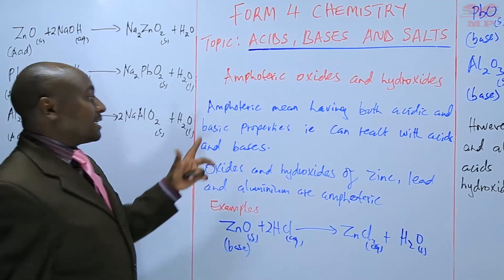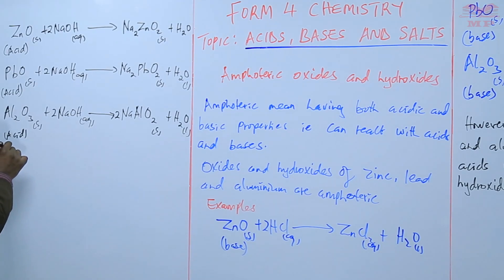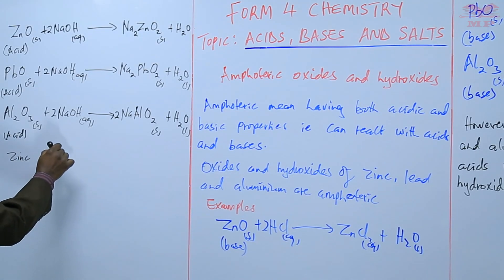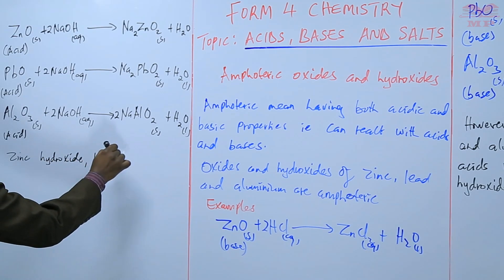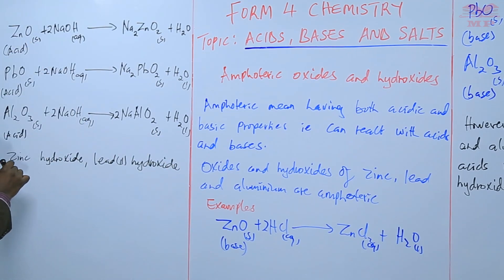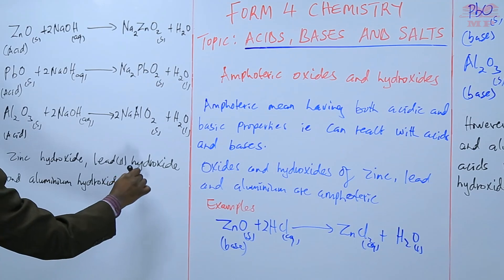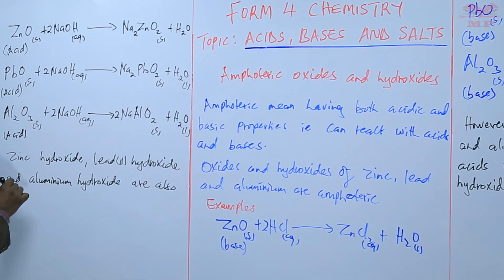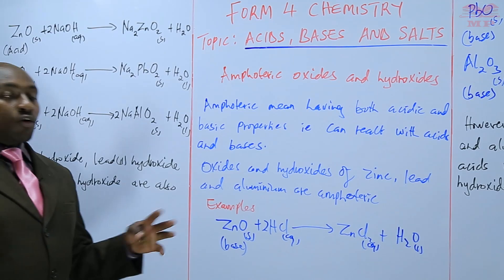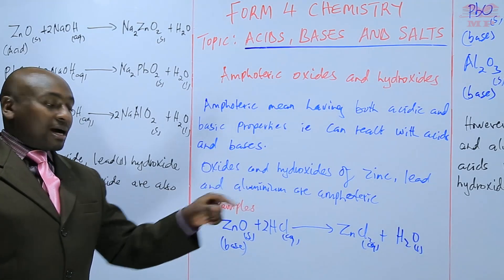So basically, their oxides are amphoteric, meaning they have both acidic and basic properties. Zinc hydroxide, lead(II) hydroxide, and aluminium hydroxide are also amphoteric — these are what we call amphoteric hydroxides. So we have both amphoteric oxides and amphoteric hydroxides for zinc, lead, and aluminium.